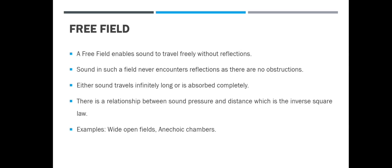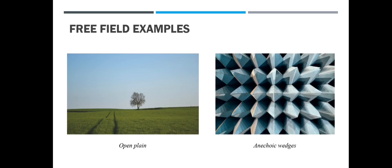Examples of a free field are wide open fields and anechoic chambers. On the left there is a wide open plane — totally flat — and if you were to yell, you would never hear your echo because sound waves emitted from your mouth will travel outward in all three directions and never come back to you.